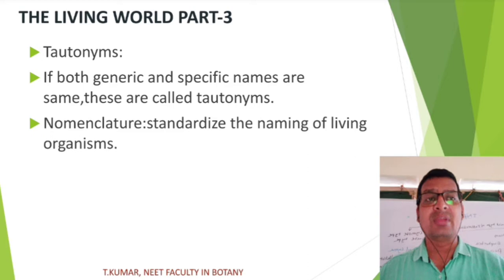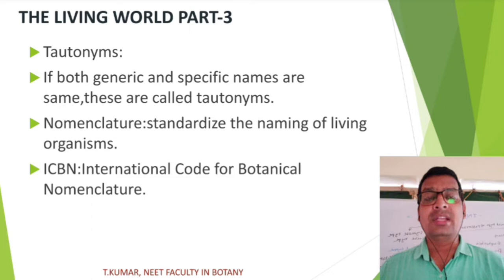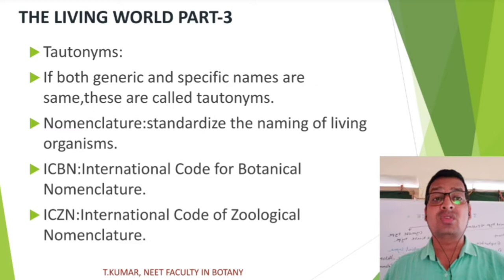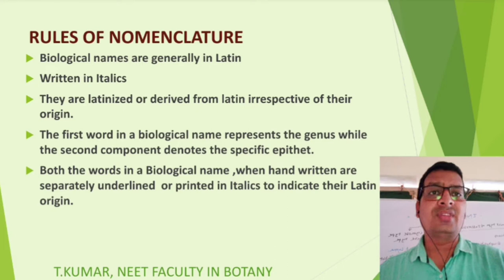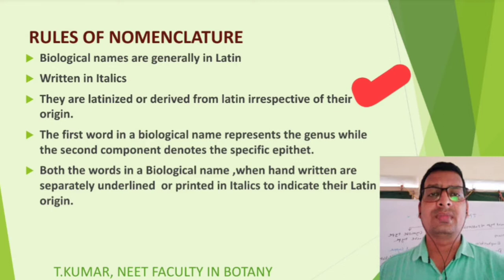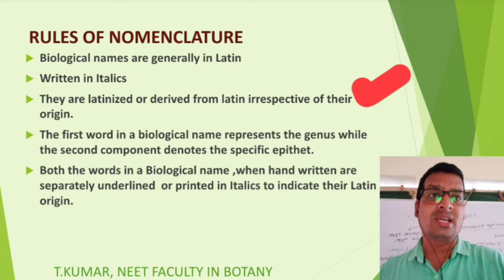ICBN stands for International Code for Botanical Nomenclature; ICZN stands for International Code of Zoological Nomenclature. Rules of nomenclature: biological names are generally in Latin, written in italics when latinized or derived from Latin irrespective of their origin. The first word in a biological name represents the genus, while the second component denotes the specific epithet.